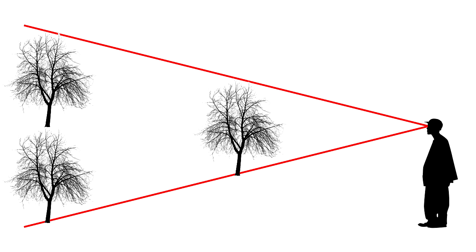I didn't have the luxury of a second camera angle, but I did have the advantage of having two distance measurements — the width and the height of the flag. This is all I need to determine where to place the camera. The astronaut does not matter at this point.